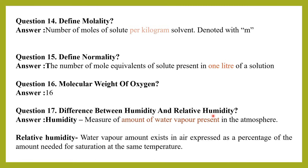What is the difference between humidity and relative humidity? Humidity is the measure of the amount of water vapor in the atmosphere, whereas relative humidity is the water vapor amount which exists in air expressed as a percentage of the amount needed for saturation at the same temperature.